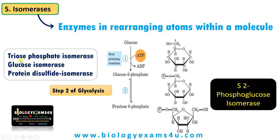The enzyme is phosphoglucoisomerase. Other examples include triosephosphate isomerase, glucose isomerase, and protein disulfide isomerase.